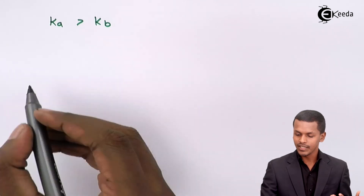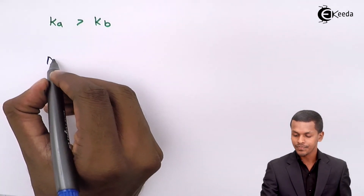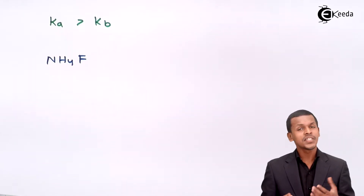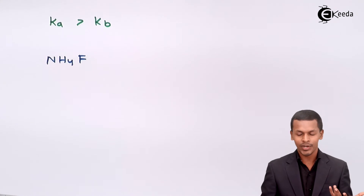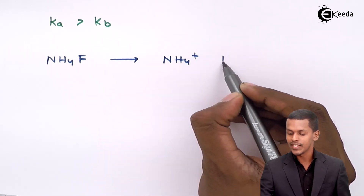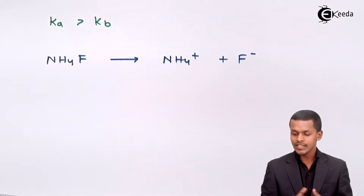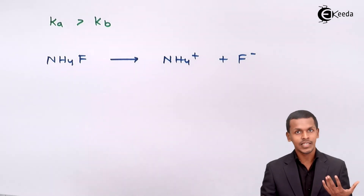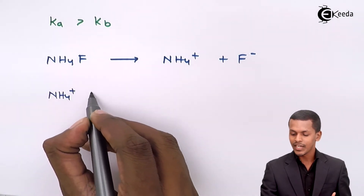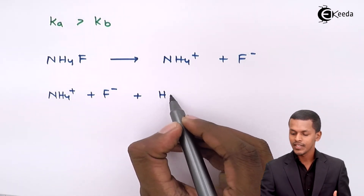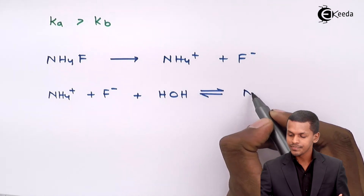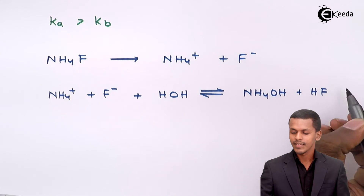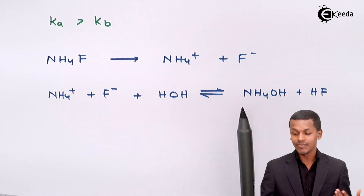As an example for the case where Ka > Kb, let us take the salt NH₄F. This salt is made up of a weak acid as well as a weak base. When reacted with water, it dissociates completely into NH₄⁺ and F⁻. These ions react with H₂O to give the products NH₄OH and HF — a weak base and a weak acid.